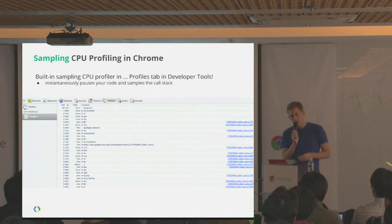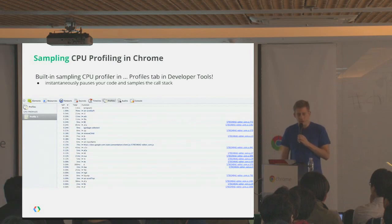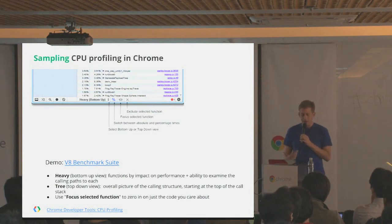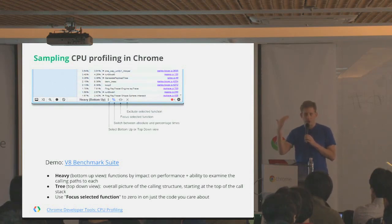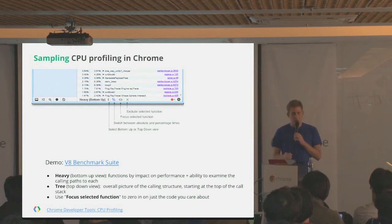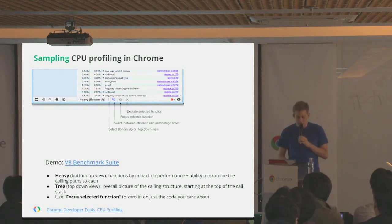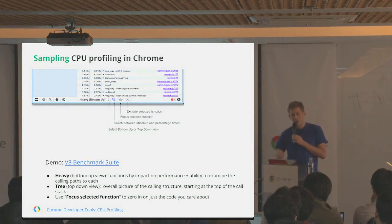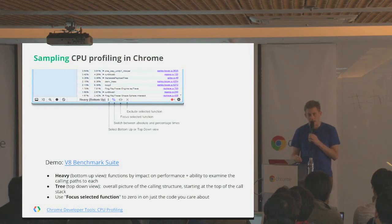Sampling profiling in Chrome is just built in — go to the Profiles tab in Developer Tools. There are different ways to view samples: the heavy or bottom-up view shows functions by impact on performance, with the most expensive exclusive time at the top; the tree view starts at main and lets you fan out to see the whole flow of execution. You can also filter by selected functions to grep through profiling data and see just the functions you care about.